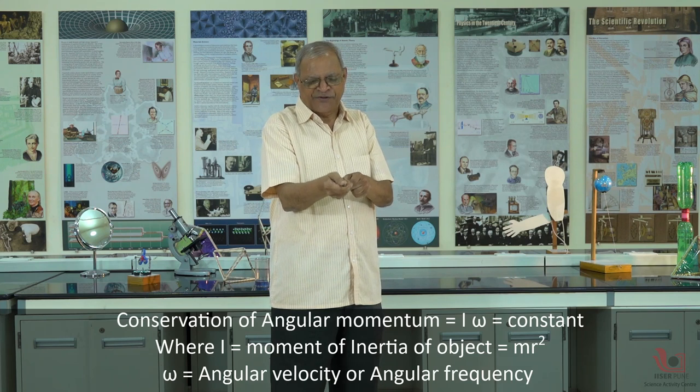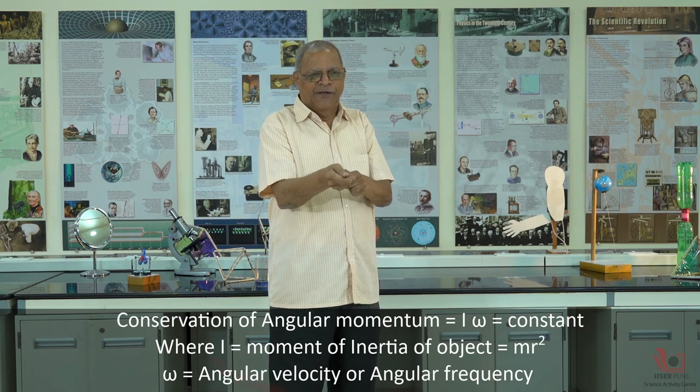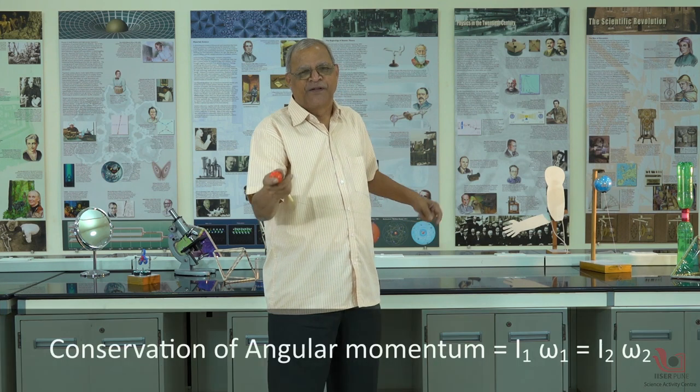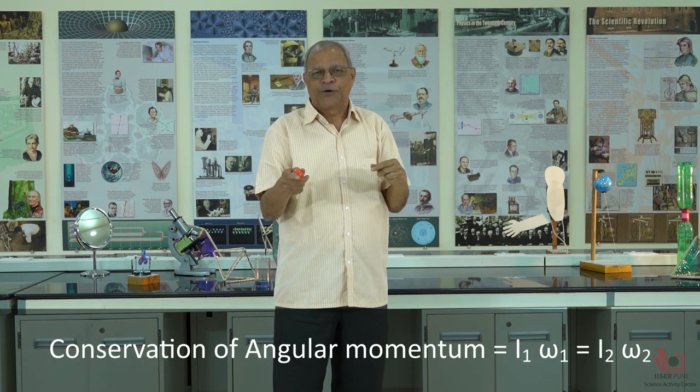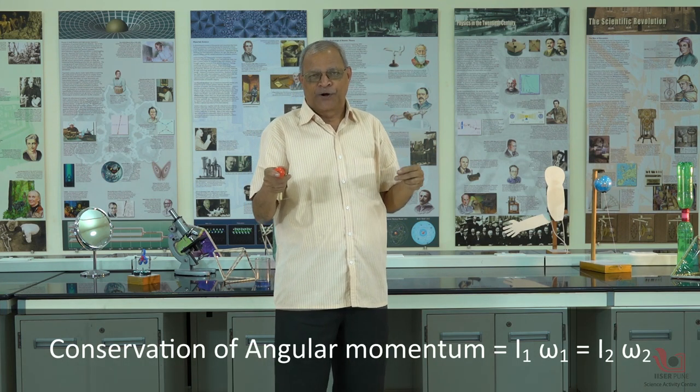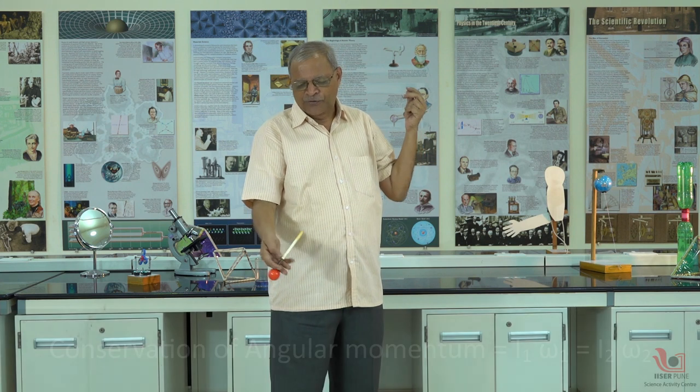When I make the radius small, the moment of inertia decreases, so I get omega increasing. Omega is increasing because I — the moment of inertia — decreases. The formula is I₁ω₁ = I₂ω₂, and that is called conservation of angular momentum.